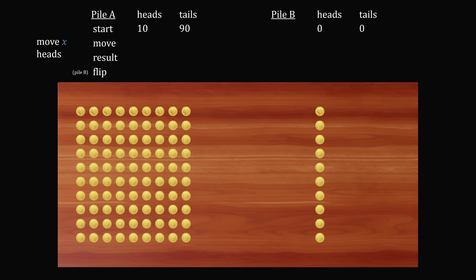We can show this algebraically. Let's say we are moving x heads. If we're moving 10 coins, that means we'll be moving 10 minus x tails. So these coins get moved to pile B. We calculate the result of this operation. We then flip all of the coins in pile B, which will switch the number of heads and tails. We end up, after all this is said and done, that we have 10 minus x heads in pile A and 10 minus x heads in pile B.